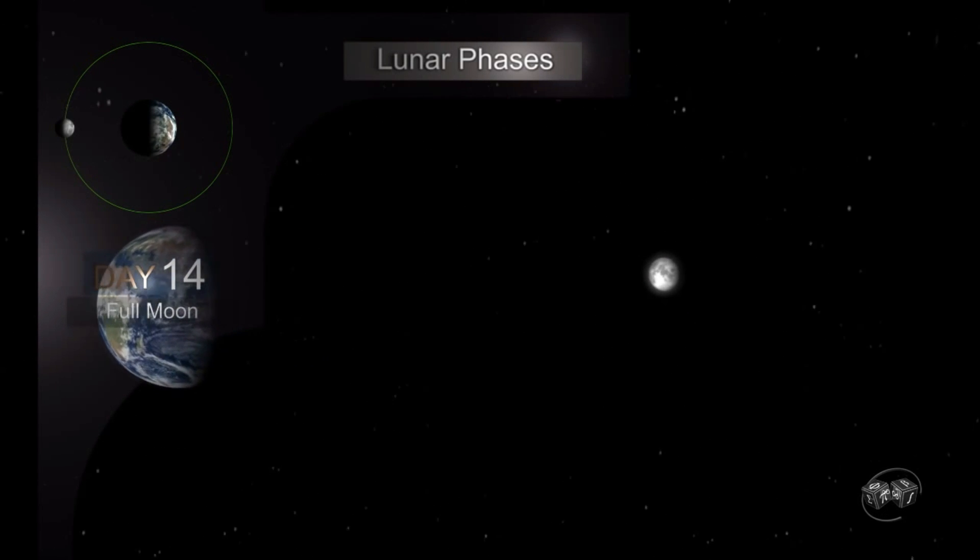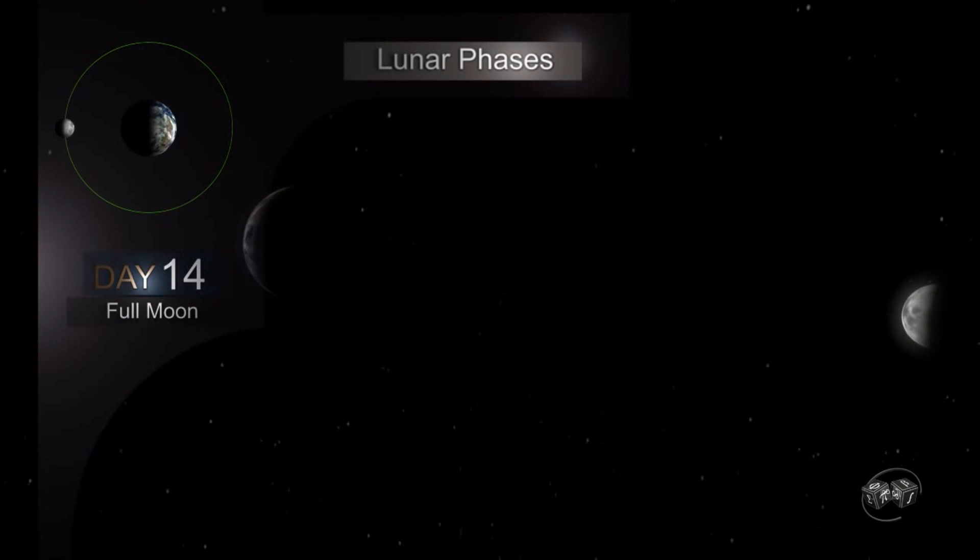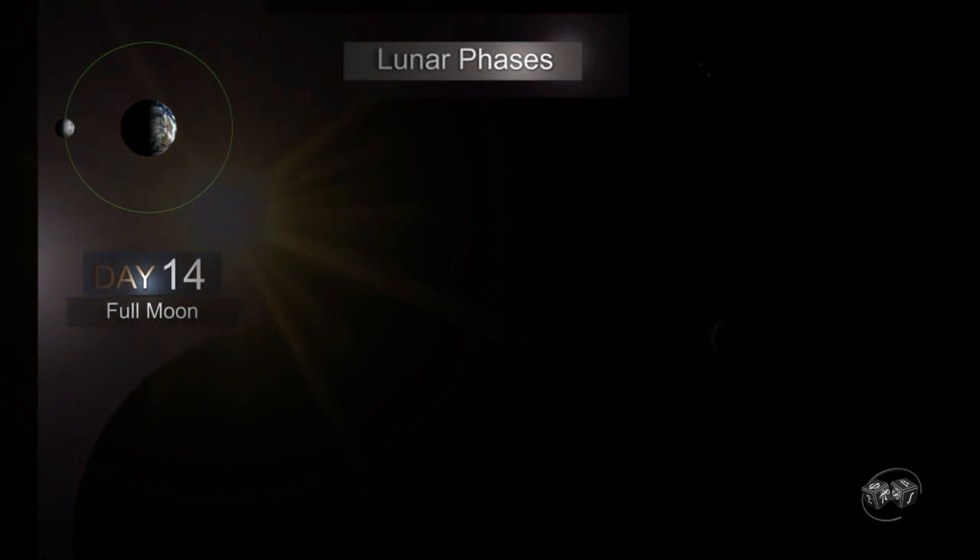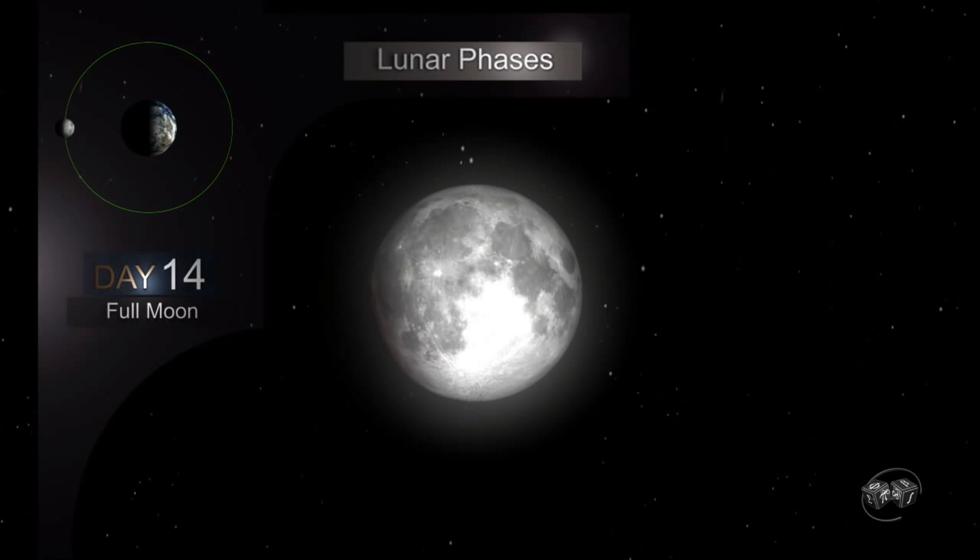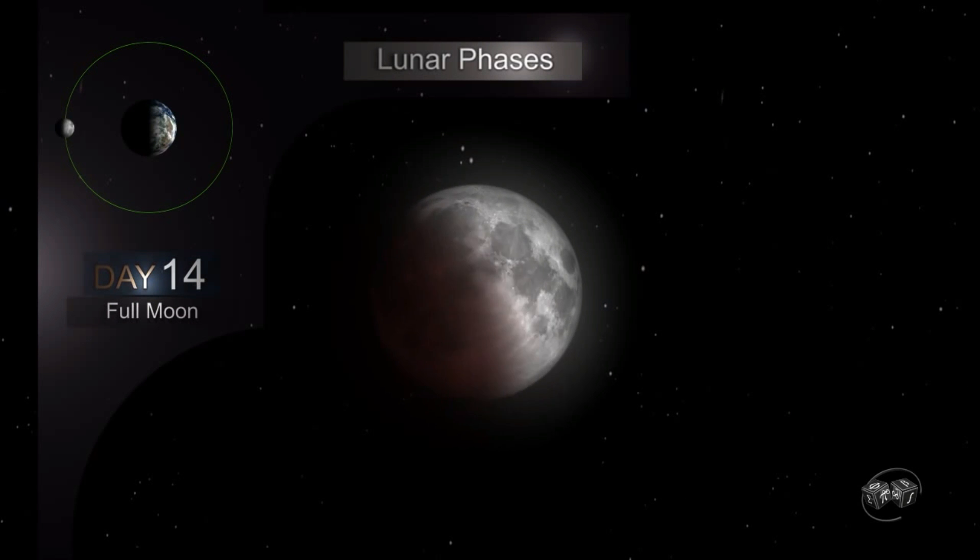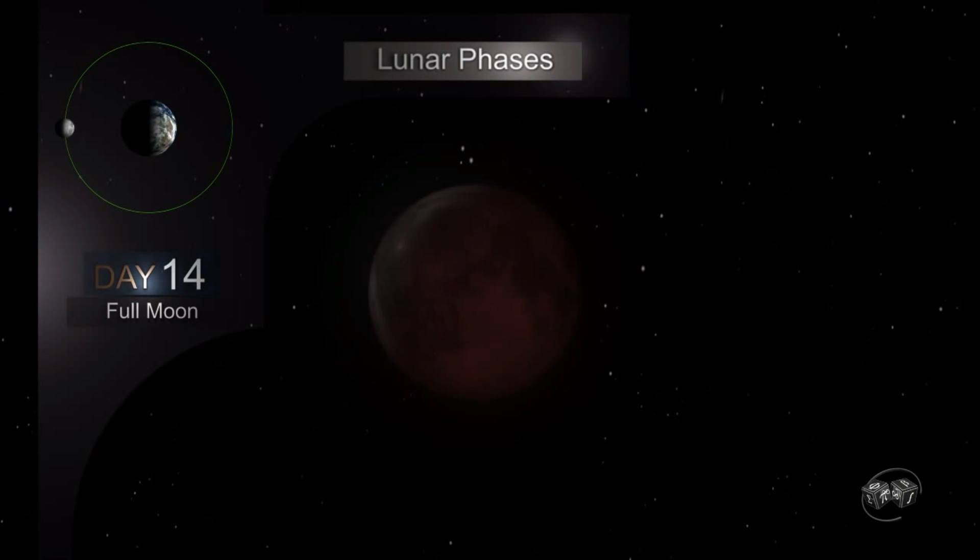During the full Moon the Earth is between the Sun and the Moon. If the right conditions are met can occur Lunar Eclipse. This phenomenon occurs when the shadow of the Earth darkens the surface of the Moon. This eclipse can last several hours.